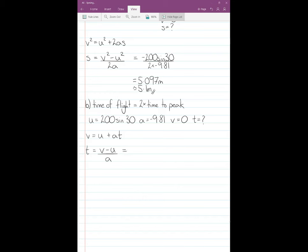Then pop my numbers in. So I've got 0 minus 200 sin 30 divided by minus 9.81. When I pop that in, that's going to give me something in the range of 10, because 200 sin 30 is 100 divided by 9.81. So it will be 10.19 seconds.